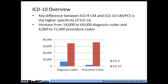To give a high-level view of the magnitude of change: we're going from about 14,400 diagnosis codes to around 69,400 diagnosis codes — several times more than under ICD-9. On the procedure side, ICD-9 PCS will go from about 4,000 to 72,000 inpatient hospital procedure codes. It will impact different specialties differently.